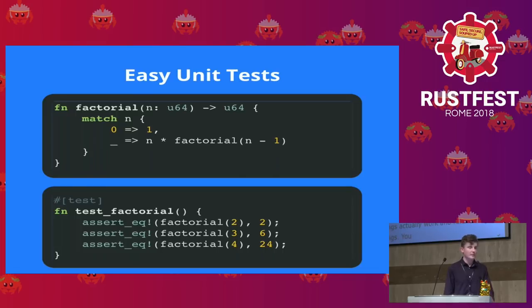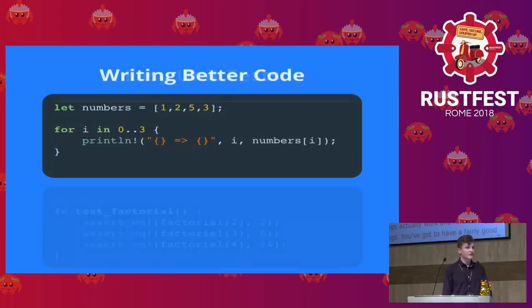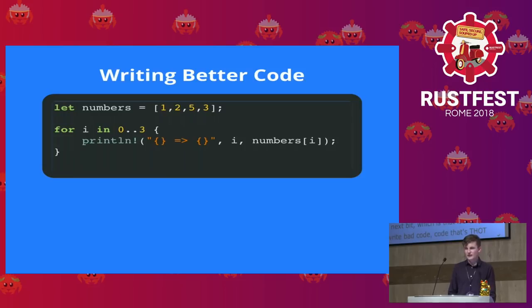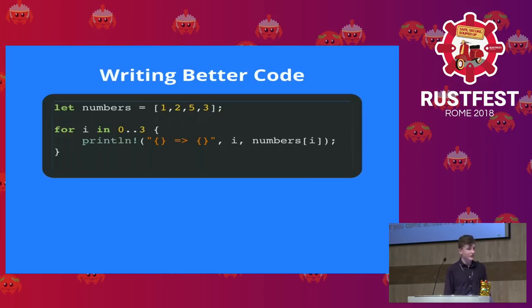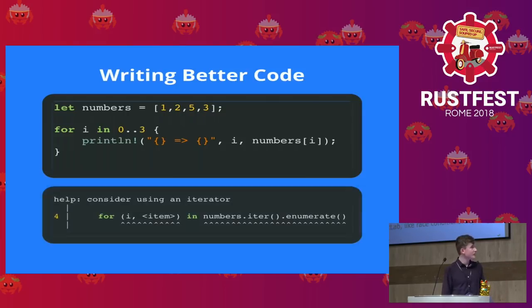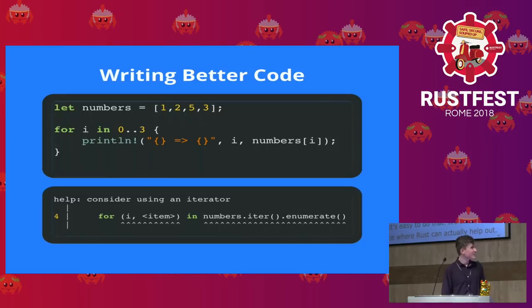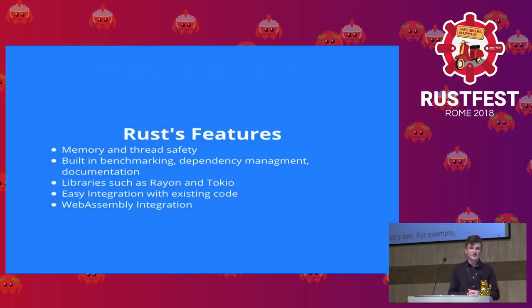For writing better code, Rust has a lot of guarantees, but also a lot of features that make things easier. Here's a piece of code that might not be written in the best way. Tools like Clippy and the linters will say, 'You can actually see that this is an iterable, so you can rewrite this a little differently,' and that will improve your code in the long run.